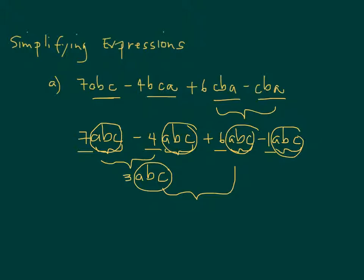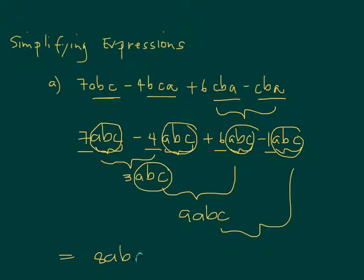How will you combine the two: three ABC and six ABC? How many ABC do we have? Nine. So nine ABC, and then minus one — so nine minus one is eight. The answer to this would be eight ABC.